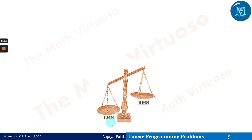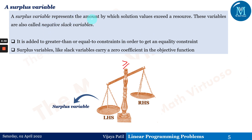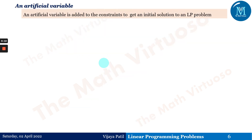For greater-than-or-equal-to constraints, where the LHS exceeds the RHS, we subtract a variable from the LHS. This is called a surplus variable, also known as a negative slack. A surplus variable represents the amount by which the solution values exceed a resource requirement. Like slack variables, surplus variables carry a zero coefficient in the objective function.